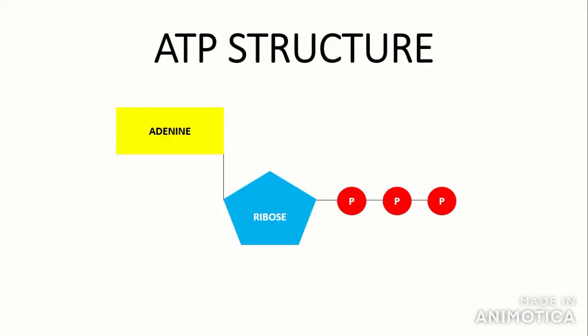The first thing you need to know is about the structure of ATP itself. The structure of ATP is similar to an adenine nucleotide — this is what we call ATP a nucleotide derivative. As you can see, we have an adenine base, a ribose group which is a five-carbon sugar, and three phosphates instead of one as you find in nucleotides. Hence the name adenosine triphosphate, ATP.